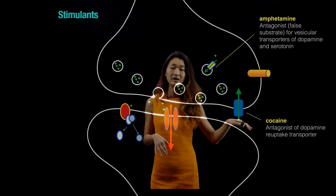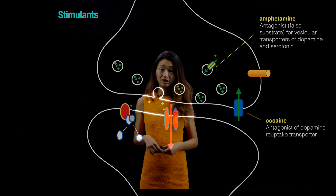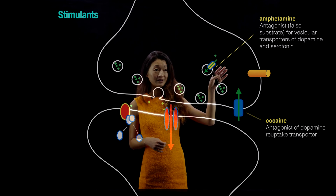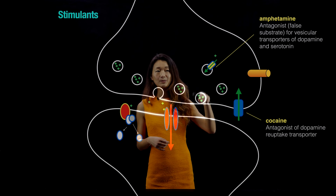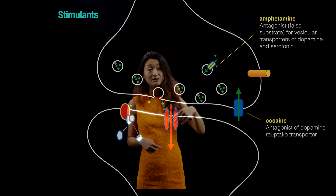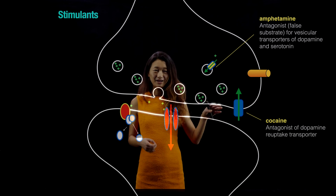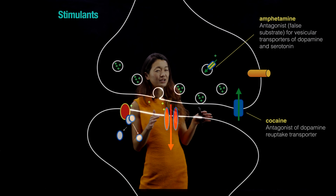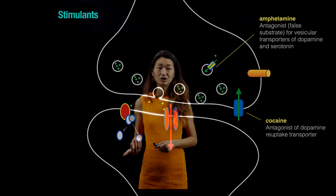That explains one of the reasons why cocaine is so pleasurable and also so addictive. Similarly, amphetamines target a different transporter system — instead of the dopamine reuptake transporter, it targets the vesicular transport system for dopamine and serotonin. Amphetamines act as a false substrate: instead of packing more dopamine and serotonin back into vesicles, it packs amphetamines into those vesicles instead. This increases local presynaptic terminal concentrations of dopamine and serotonin, which is one of the known molecular targets of amphetamines.